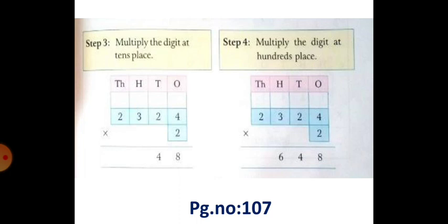Next, multiply the digit at hundreds place. So the hundreds place numbers are 3 multiplied by 2. 3 into 2 is 6. You have to write 6 in hundreds place.